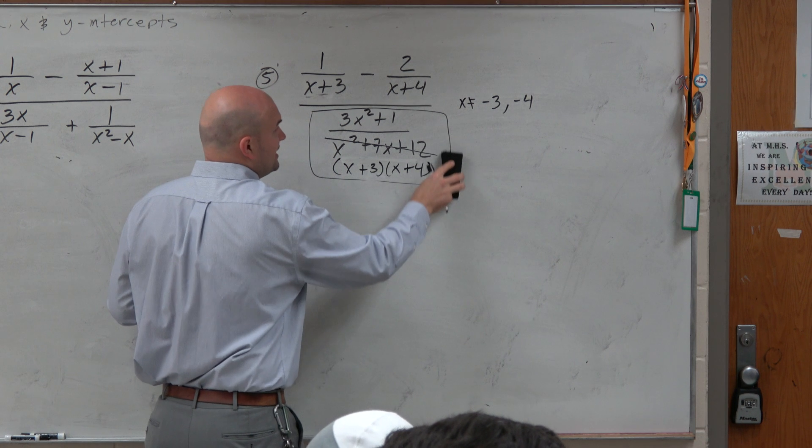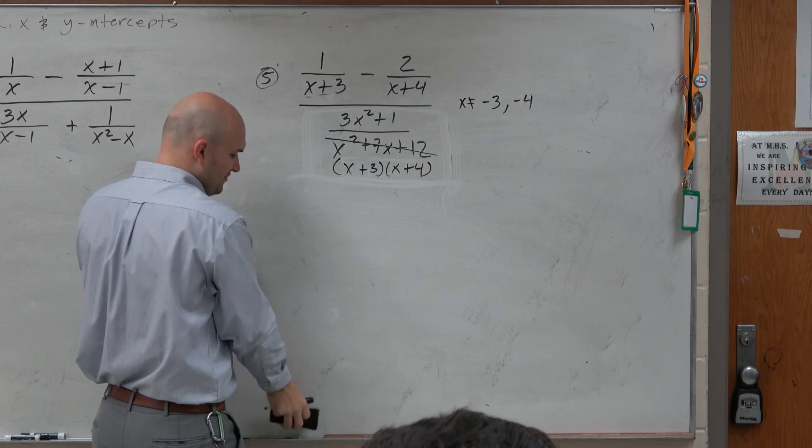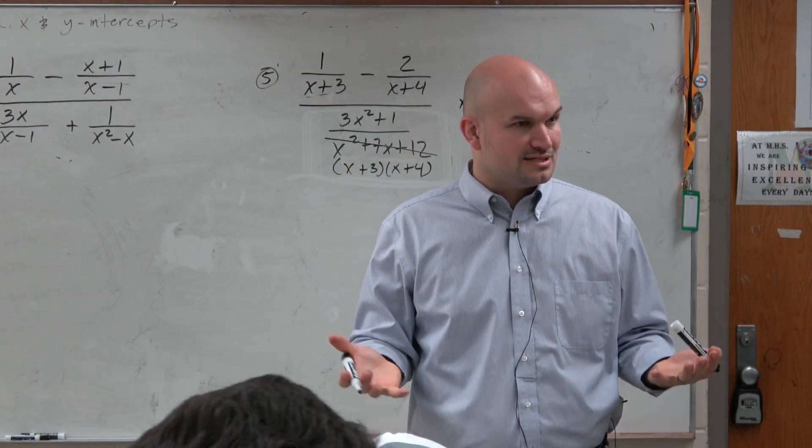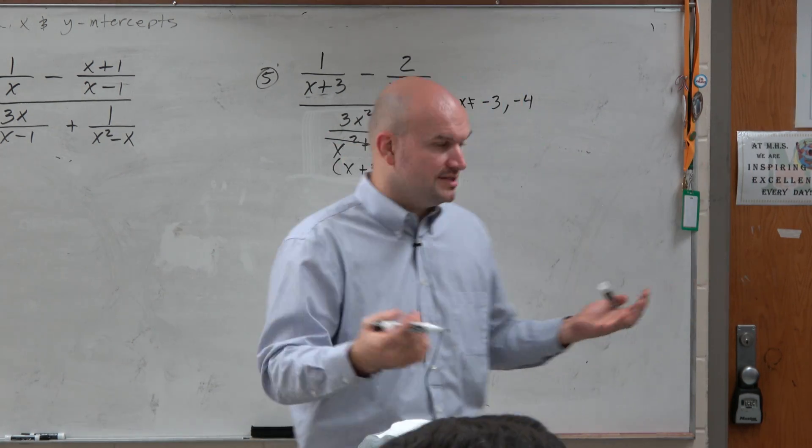Now what we need to do is simplify. So we can look at the restrictions. And now we're going to go ahead and simplify. So the way that I like to simplify is just like how I taught last class period. Identify the LCD and multiply everything by the LCD.